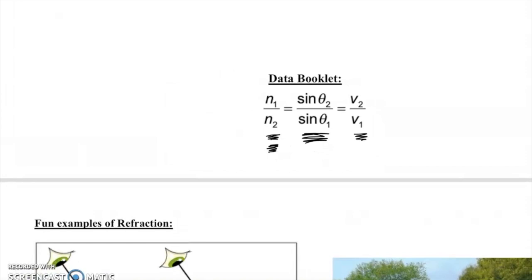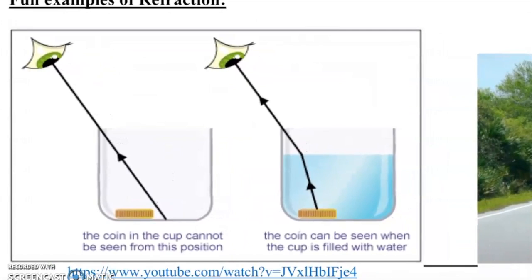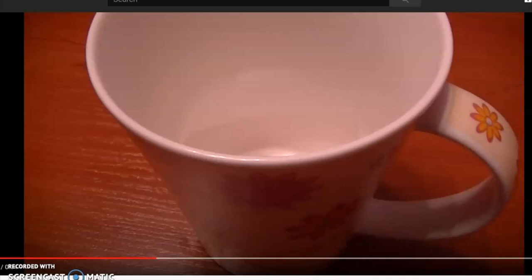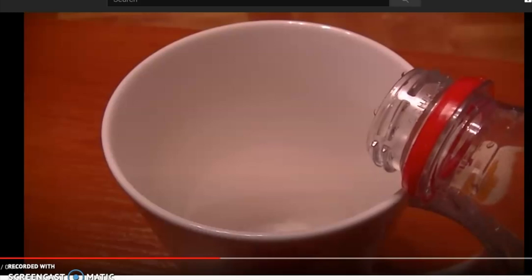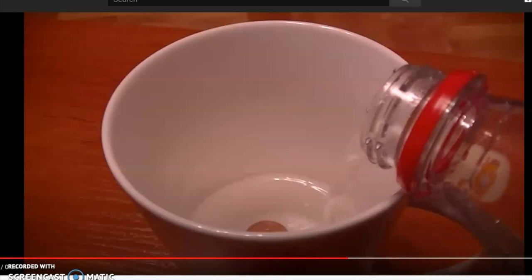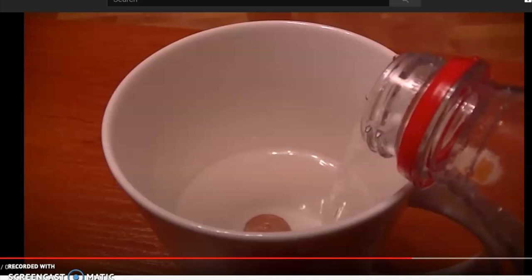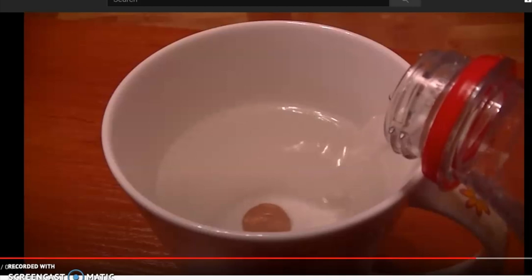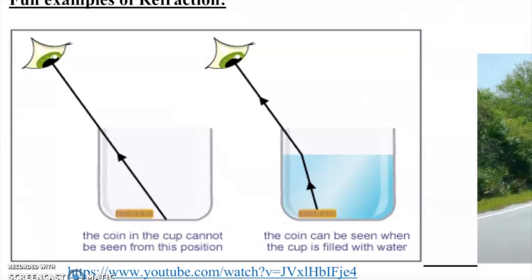Here are some fun examples of refraction. First: place a penny in a mug so it's barely visible, then pour in regular water. Because water has a different index of refraction, it bends the light enough that you can now see the penny. You can try this at home — position the penny right at the edge of visibility and pour in water until it appears.